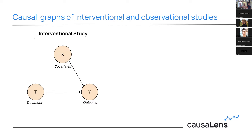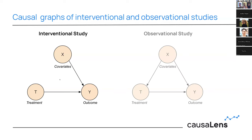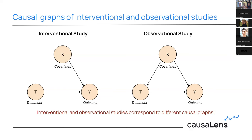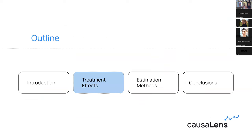The underlying causal graphs of these two study types are actually different. For an interventional study, because we've ensured similar covariate distributions across groups, there is no causal arrow from the covariates to the treatment. For an observational study, covariates do causally affect the treatment, so there is an edge from covariates to treatment. This means interventional and observational studies correspond to different causal graphs, requiring different causal operations.